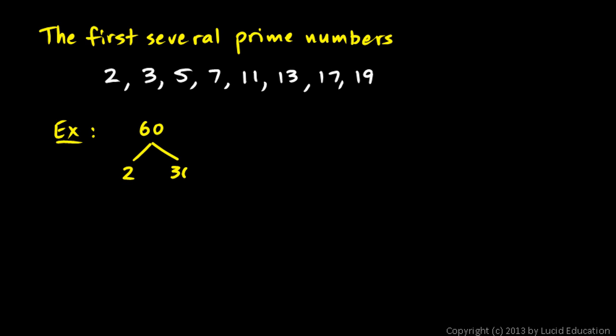I'm on the 2 right here. So now is 30 divisible by 2? It is. It's 2 times 15. Now is the 15 divisible by 2? It's not. So we go to the next prime number.